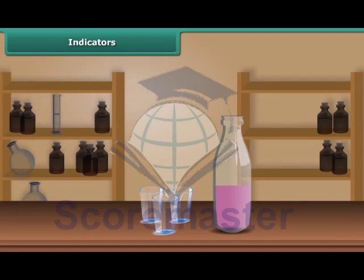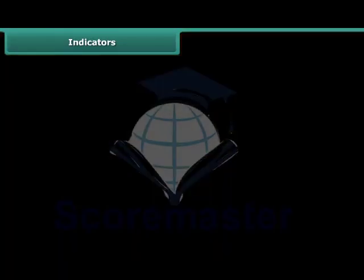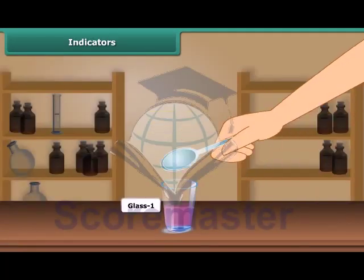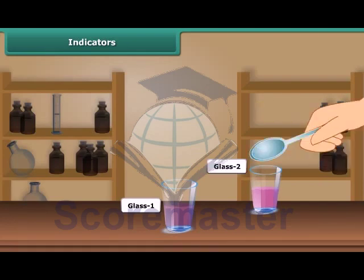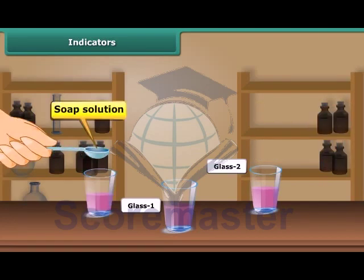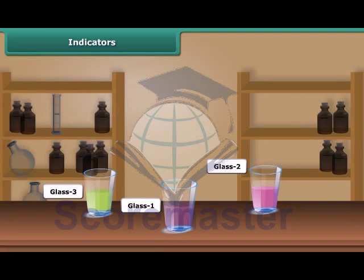Take a small amount of this indicator in three small glasses. Pour lemon juice in the first glass, water in the second glass, and soap solution in the third glass. You can notice that in glass one, the color changes to dark pink. Lemon juice is acidic in nature, so there is a change in the color of the indicator.